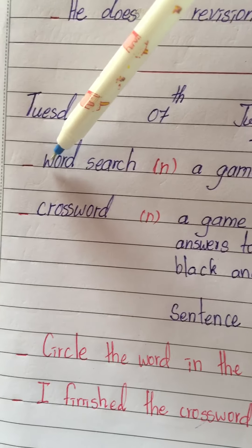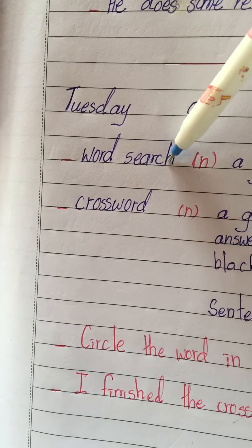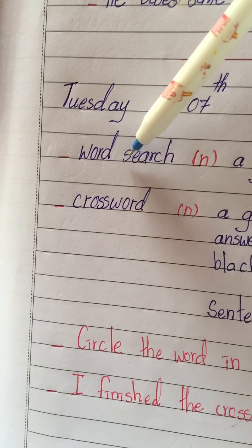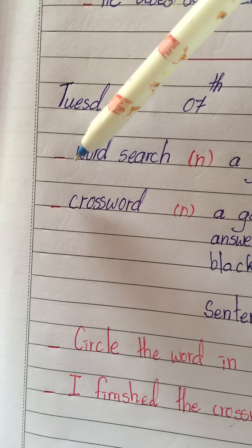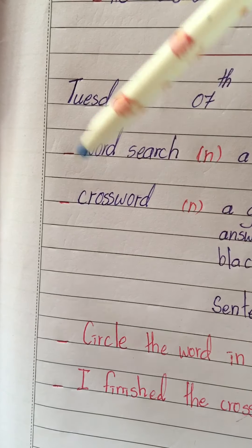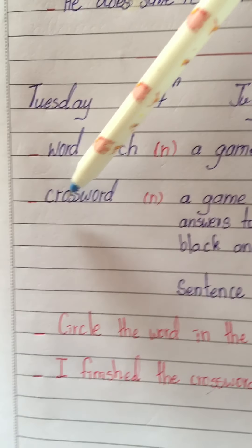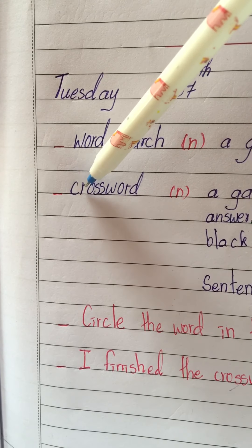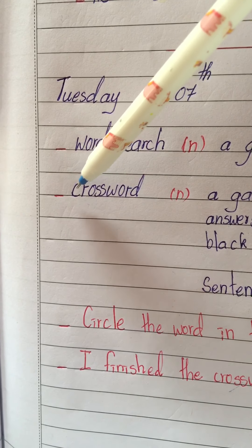Let's spell them. Word search: W-O-R-D S-E-A-R-C-H, word search. Now crossword: C-R-O-S-S-W-O-R-D, crossword. Now your turn — spell crossword.